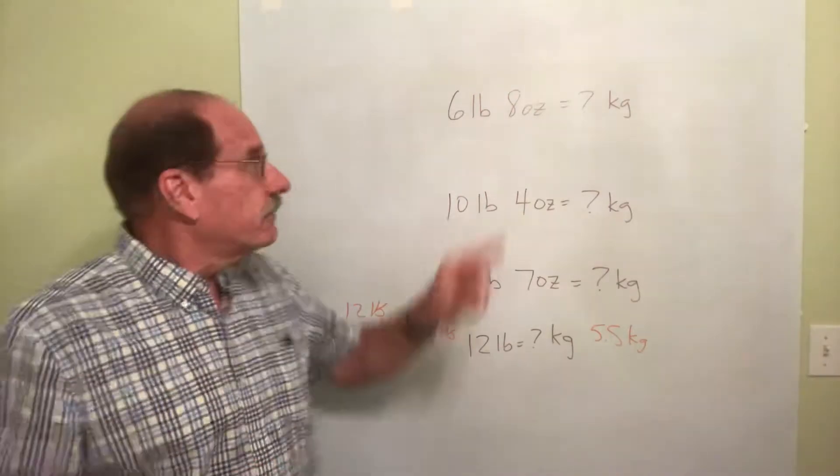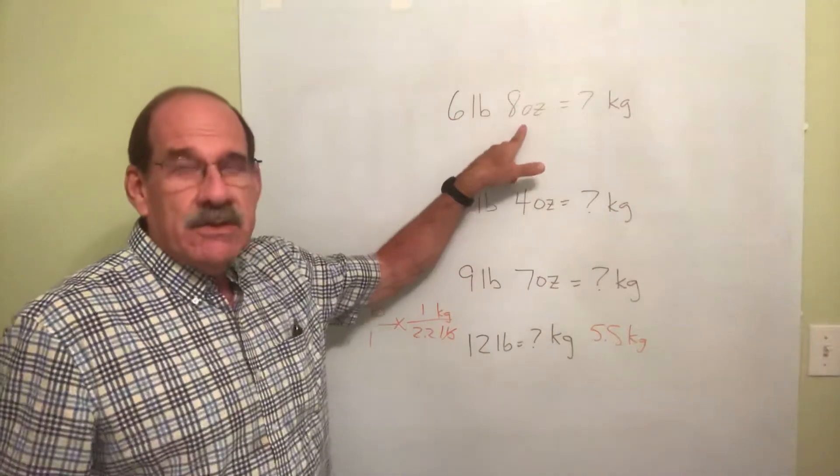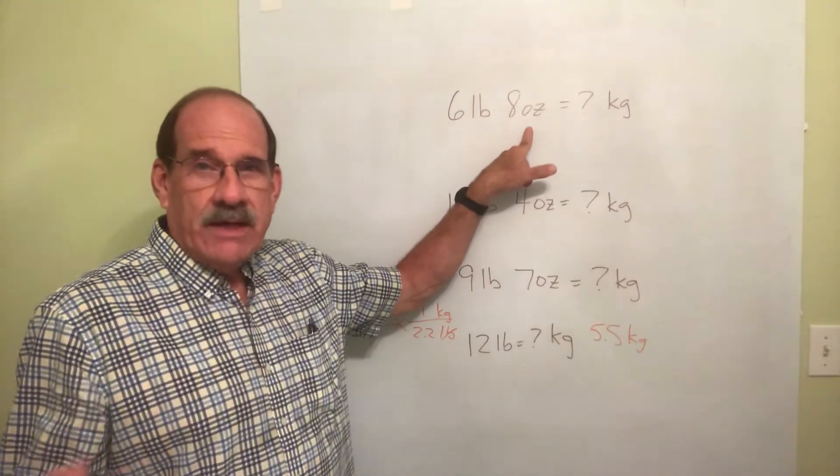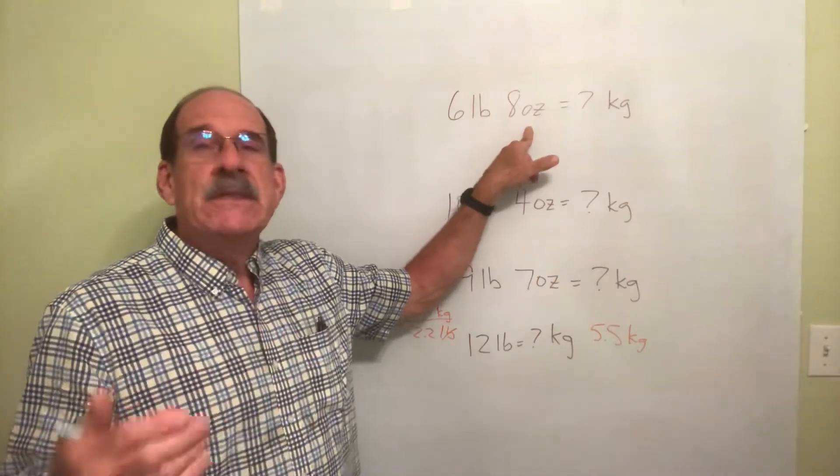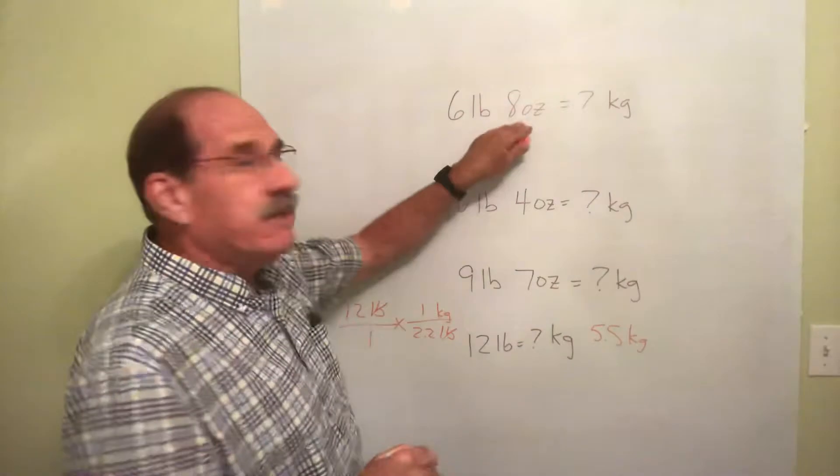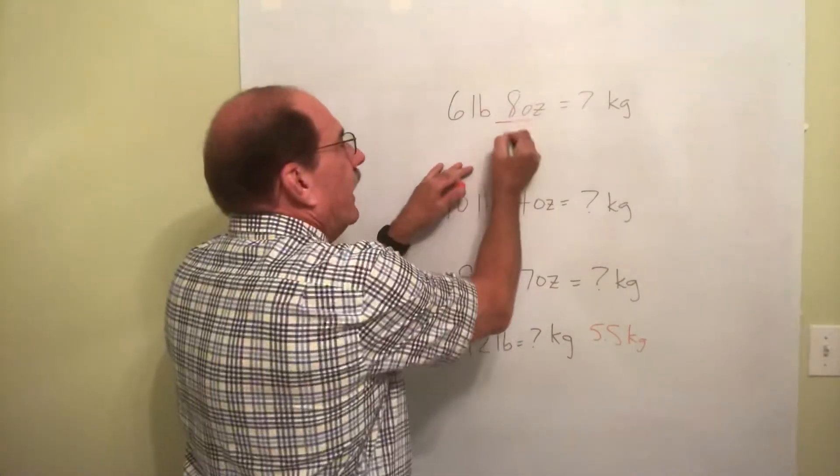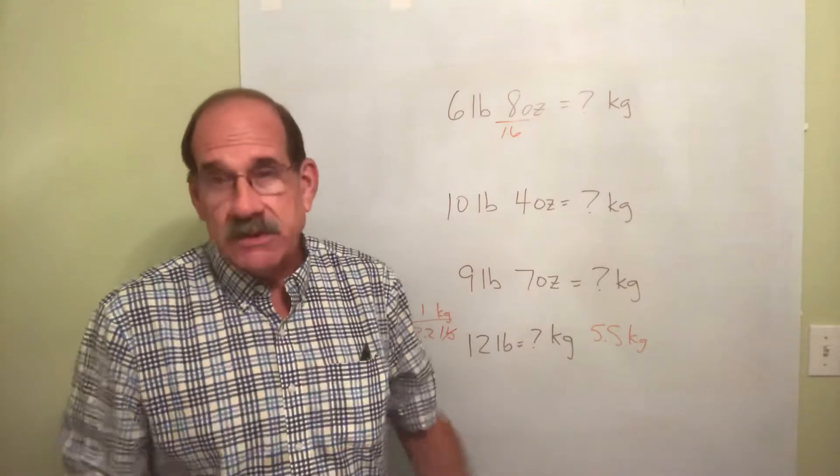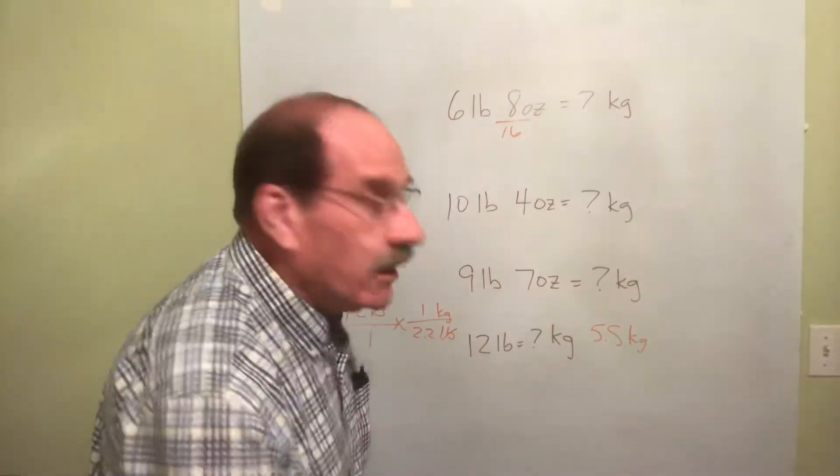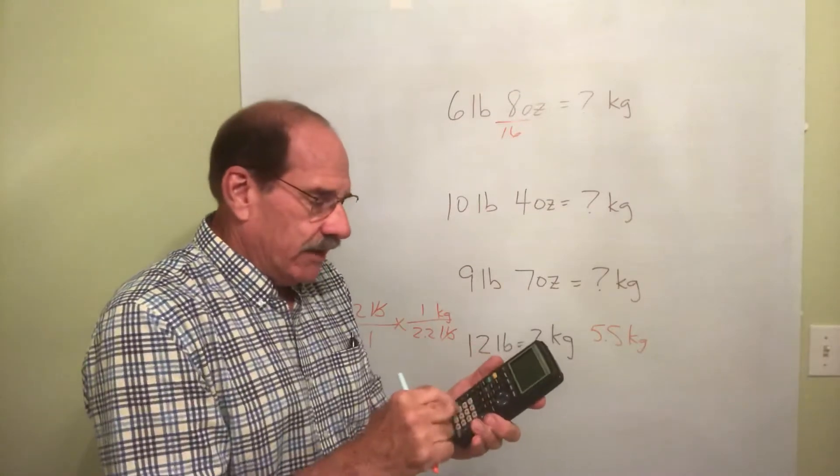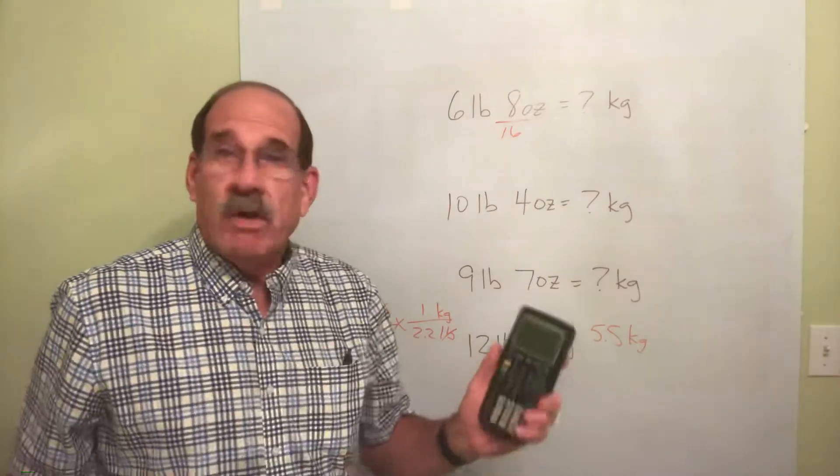Well think this out first. 6 pounds and 8 ounces. 8 ounces would be a half of a pound, right? 8 is half of 16. But just to prove it, do it on your calculator. If you first take the ounces, divide by 16, because there are 16 ounces in a pound. So go ahead and show yourself on the calculator. You take 8, you divide it by 16, well it says 0.5.